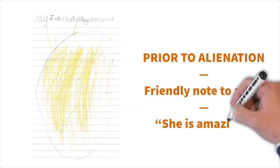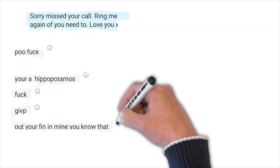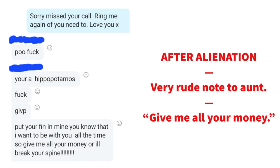Before alienation, a friendly note to Ant. She is amazing. She is my shield. After alienation, she writes a rude poem after a profanity-laced text ending, and says, give me all your money or I'll break your spine.